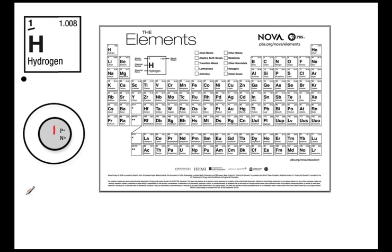If we were to look at the atomic mass and we round it to the nearest whole number, that would be the total of one minus the one proton would equal zero neutrons. So hydrogen is pretty unique in the sense that it has no neutrons.